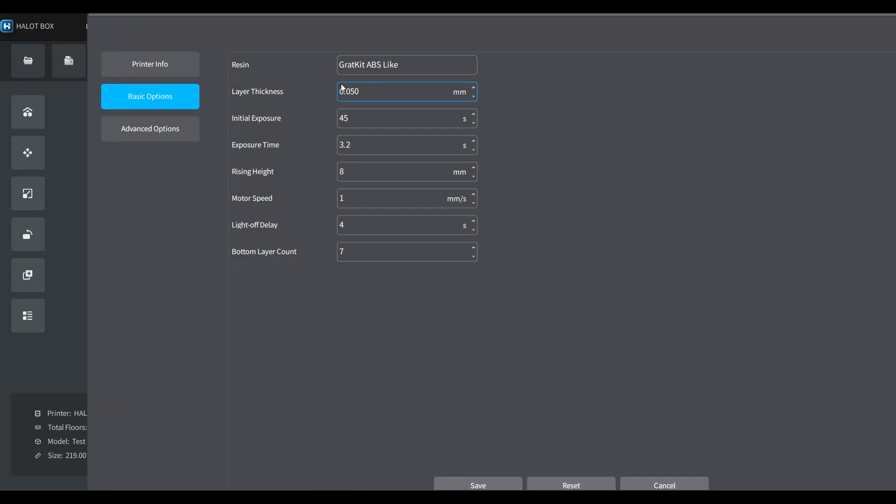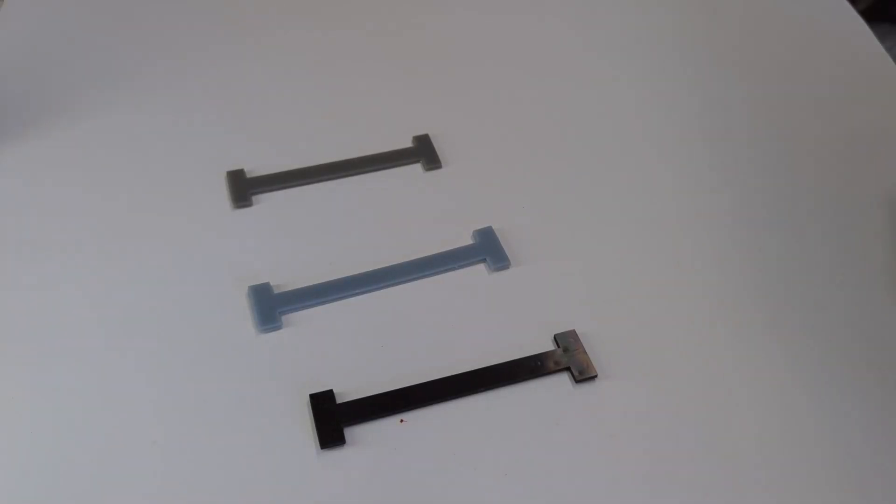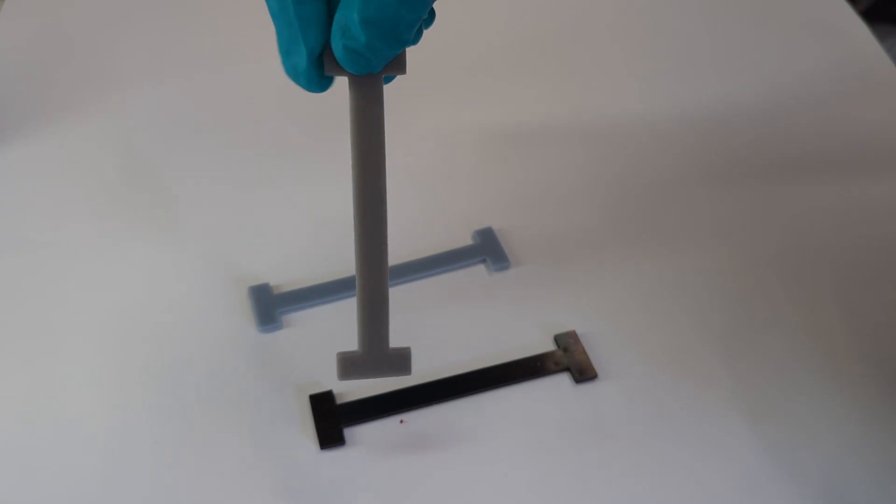Here's a quick view of my final settings: a layer height of 50 microns, a base exposure of 45 seconds, and a normal exposure of 3.2 seconds. I always tend to put a higher lift height than would be necessary, but when you come to print big things, it can save you some trouble. And finally, I would have liked to increase my lift speed to 1.5mm per second, but with this slicer, you cannot put decimals in the lift height, motor speed, and light off delay.